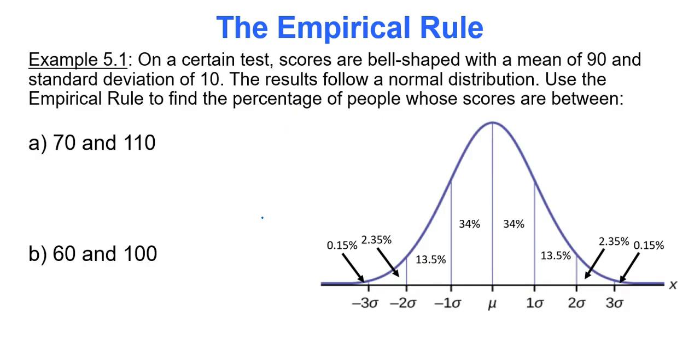On a certain test, scores are bell shaped, remember that's a super important word, with a mean of 90, also important, and a standard deviation of 10, also important. By the time this is over I'm going to underline everything, right? It's all important. Everything's important. Sort of. So the results follow a normal distribution.